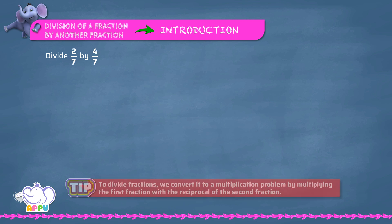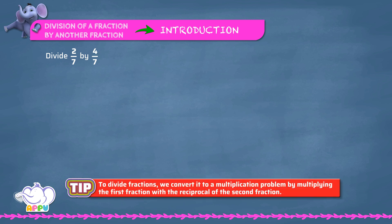Divide 2/7 by 4/7. We write this as 2/7 divided by 4/7. Then we multiply the first fraction with the reciprocal of the second fraction: 2/7 times 7/4. 2 divides 2 once, and 2 divides 4 twice.